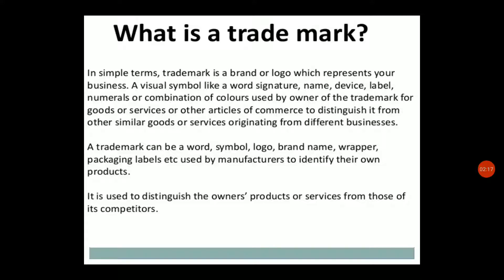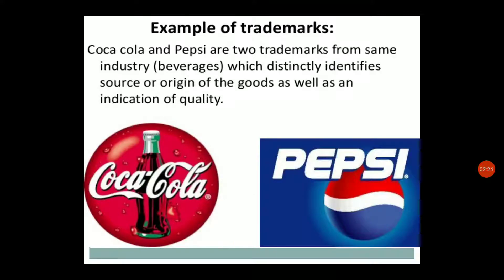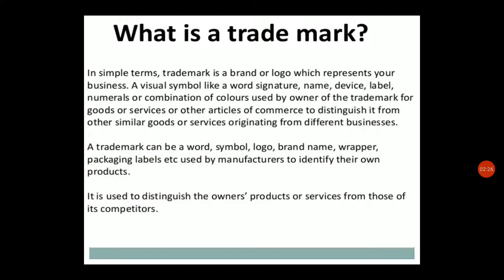A trademark can be a word like Pepsi or 'I'm lovin' it.' A symbol can be anything like a tick sign for Nike, three stripes for Adidas, a logo, a brand name, or a wrapper. It can be any packaging which helps in distinguishing a product from other products, used to distinguish the owner's product or services from those of competitors.